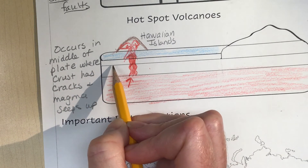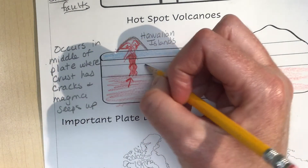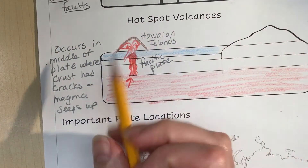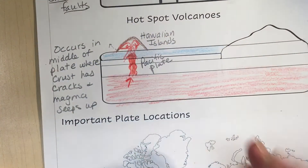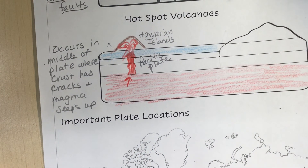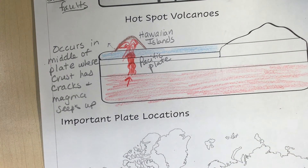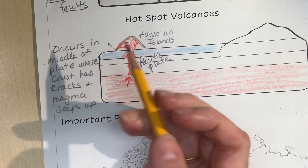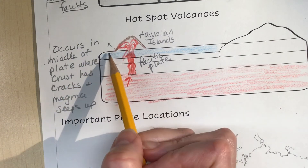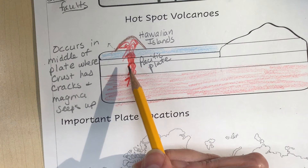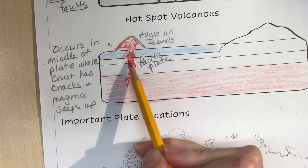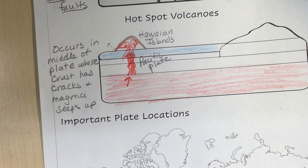The Pacific Plate is moving in a northwest direction, so the newest island is in the bottom corner — that's the Big Island, which continues to have active lava. The older islands are furthest away. Over thousands of years the islands move away from the hot spot and a new one comes up. In fact, there's a new Hawaiian island currently a seamount from those cracks — it will become above water but it might take another thousand years.